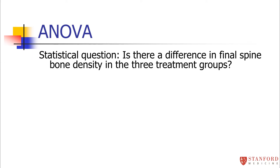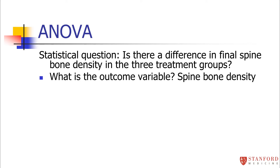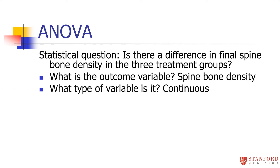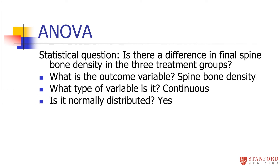How do I get to a one-way ANOVA? I'm going to walk you through the logic to get to the right test. The question is: is there a difference in final spine bone density in the three treatment groups? The outcome variable is spine bone density — it's a continuous variable. Is it normally distributed? Yes, I'm telling you that it's normally distributed.